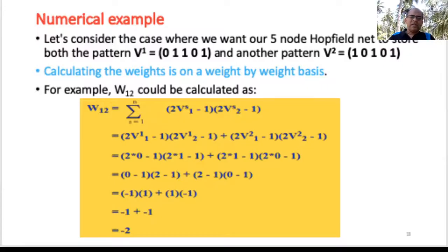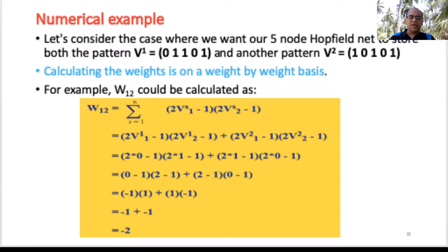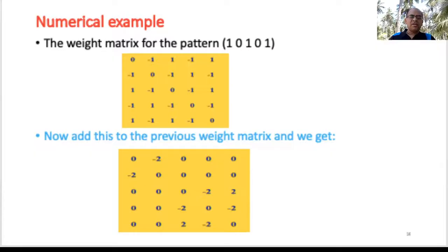Now consider storing two patterns: [0, 1, 1, 0, 1] and [1, 0, 1, 0, 1]. We calculate weights for each pattern. For instance, w_12 uses the sigma summation from 1 to n, giving −2 for the combined case. Similarly compute all weights for the second pattern [1, 0, 1, 0, 1], then simply add the two weight matrices together using matrix addition.